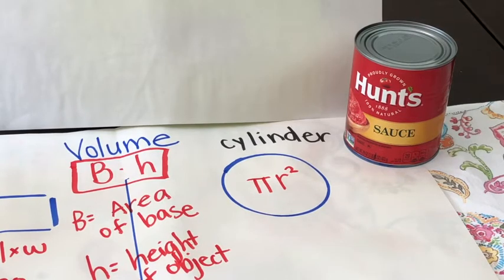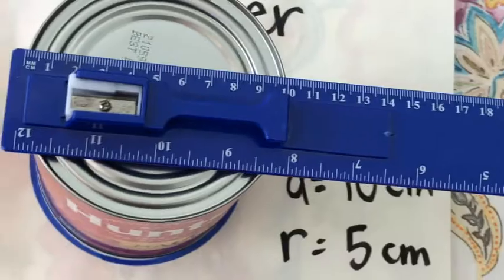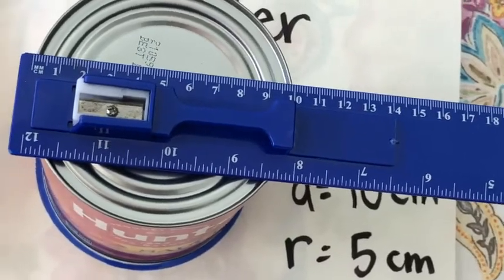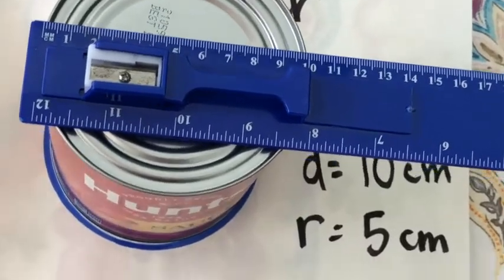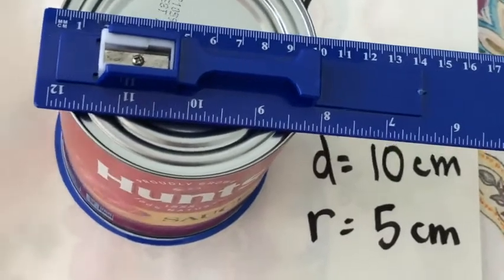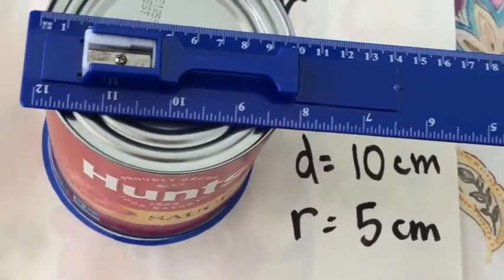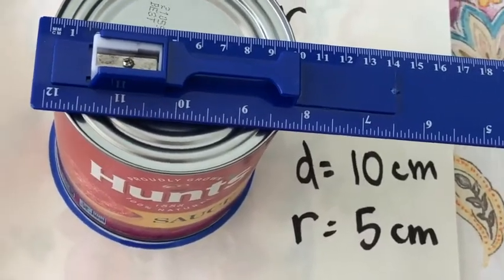Next I'm going to measure the diameter of the can and divide that number by 2. As you can see on the ruler, the diameter is 10 centimeters, therefore the radius equals 5 centimeters.